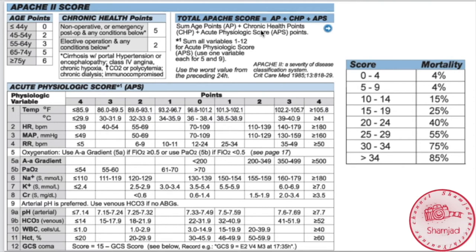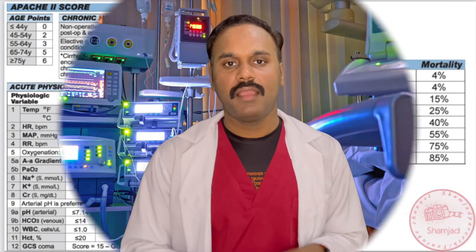The total APACHE score equals age points plus chronic health points plus acute physiological score. According to the total score, we calculate the mortality percentage. If the score is 0 to 9, the mortality chance is 4%. As the APACHE score increases, mortality risk rises — if the score is more than 34, the chance of mortality is 85%. A simple way to calculate this is by using websites and applications available on the internet: just enter the required values, press calculate, and you will get the results.